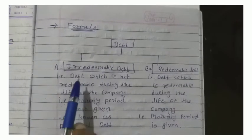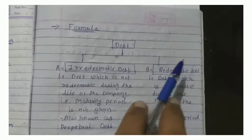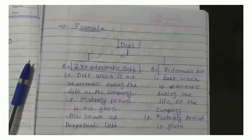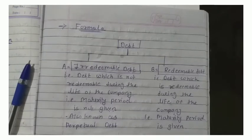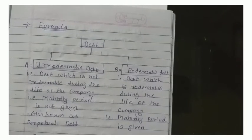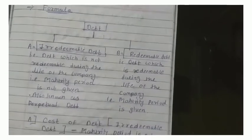There are two types of debt: irredeemable debt and redeemable debt. Irredeemable debt means when the maturity period is not given — that means the number of years is not given. Redeemable debt means it is redeemed during the life of the company — that means the maturity period is given.